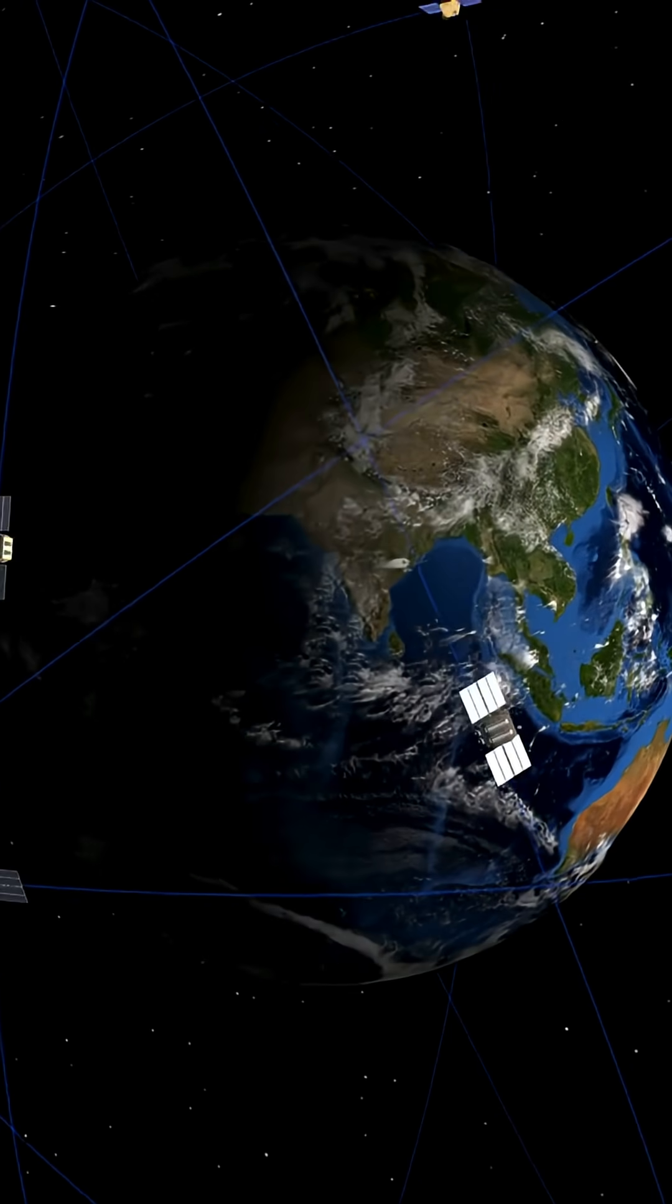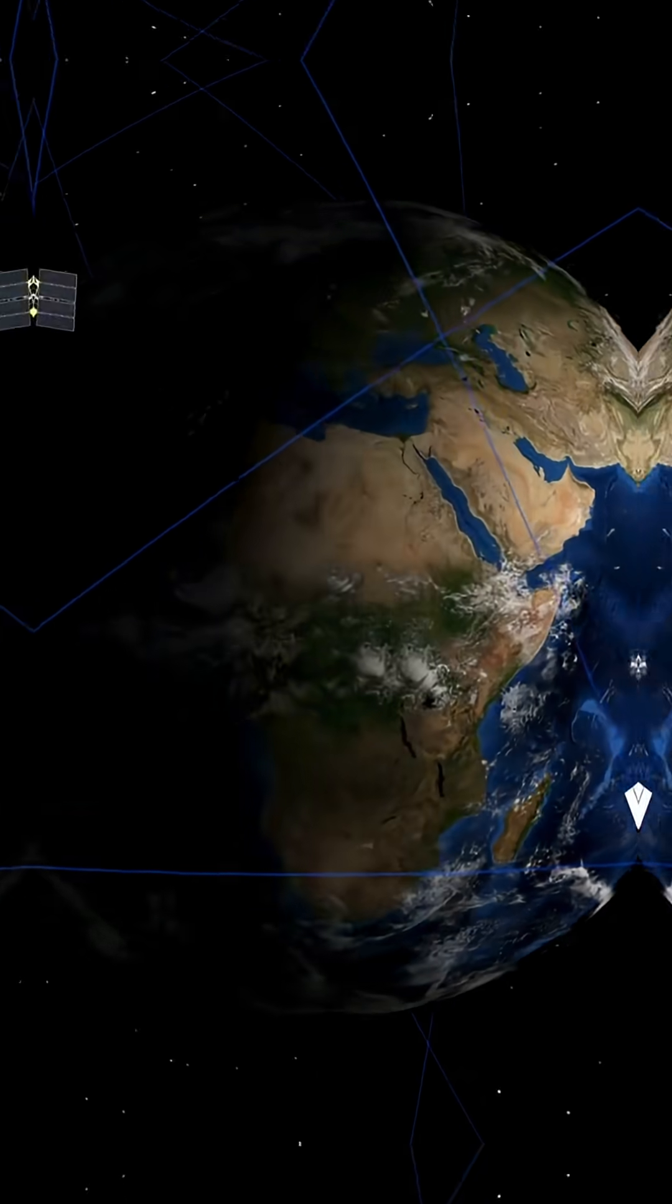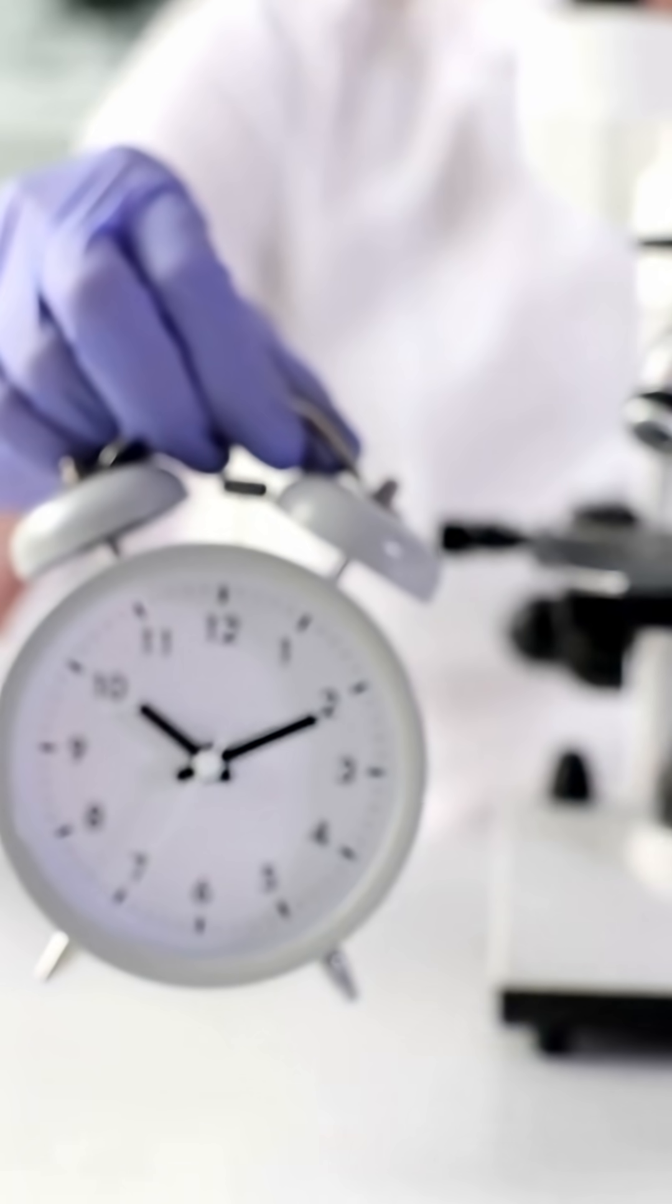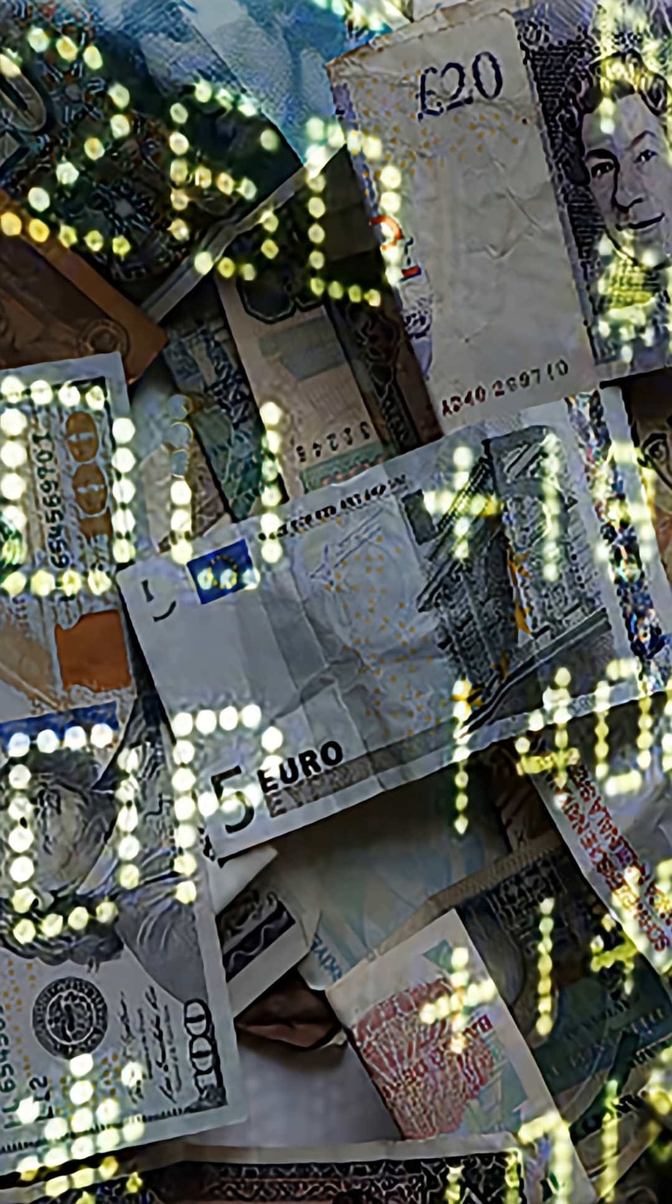Without atomic clocks, GPS wouldn't work. Each satellite needs time measured to within nanoseconds. They also keep the internet synced and help scientists test the laws of physics with insane precision. Even the global financial system relies on atomic time for transactions.